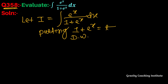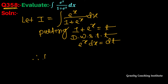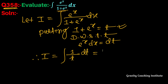Let t equal to 1 plus e to the power x. Differentiating with respect to t, the constant is 0, so dt equals e to the power x dx. Therefore I equals the integration of 1 over t dt, which equals log mod t plus C.